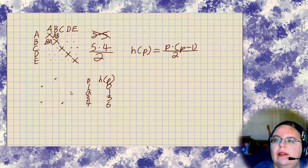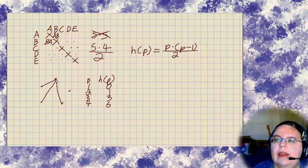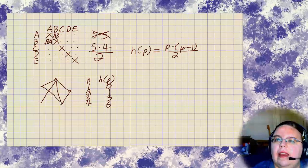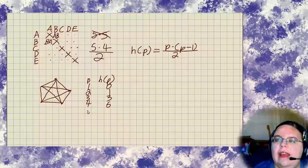And then five people would be one, two, three, four, five, six, seven, eight, nine, ten handshakes.